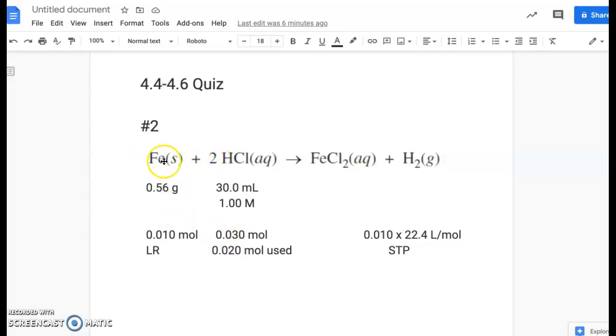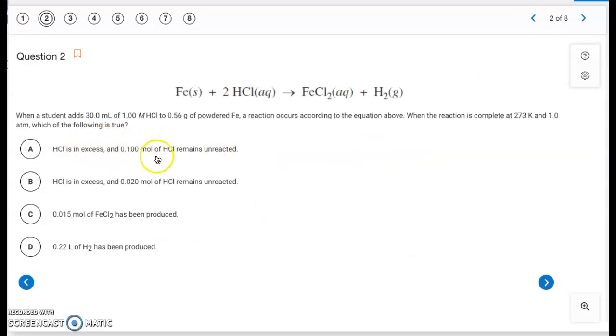Now comparing that to the mole ratio, it's a 2 to 1 mole ratio. So the 0.01 moles of iron would need 0.02 moles of HCl. So that means your iron is your limiting reactant. And that also means that 0.020 moles of this HCl is used up. So going back to our choices, that really eliminates A and B because we would have 0.01 moles of HCl left over after that got used up. So A and B are incorrect.